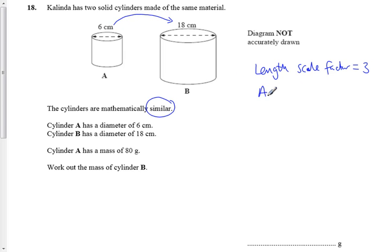That tells us that the area scale factor, in this case, is actually going to be 3 squared, or 3 times 3, which is 9. The area, so if we worked out the area of the tops, this area of B would be 9 times bigger than the area of A.